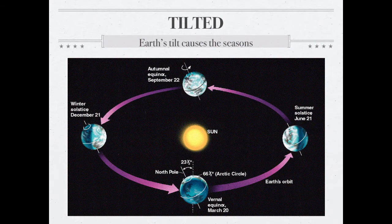One of the other major things that affects the climate of an area is the tilt of the Earth. The Earth is tilted at 23 and a half degrees. As the Earth rotates around the sun, that 23 and a half degrees becomes really important. I'm going to walk you through this — basically it's going to tell you all about the seasons.